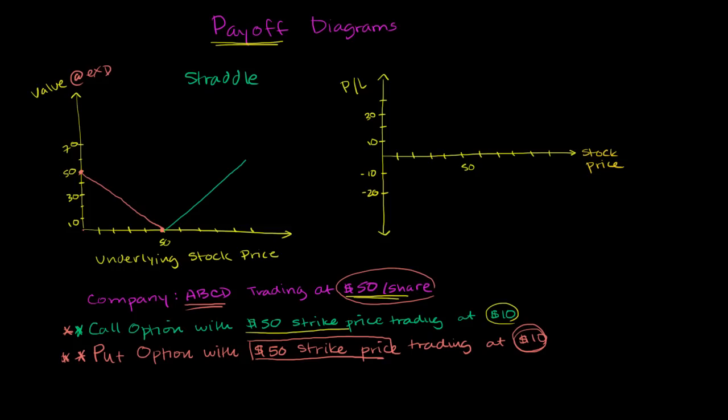And when you think about it from the profit and loss point of view, you just shift it down based on the amount that you paid for the two options. So in this case, we paid $20 for both options. So in this situation where we would exercise the put, instead of making $50, we have to net it for the $20 we paid for the options, so we would only make $30.